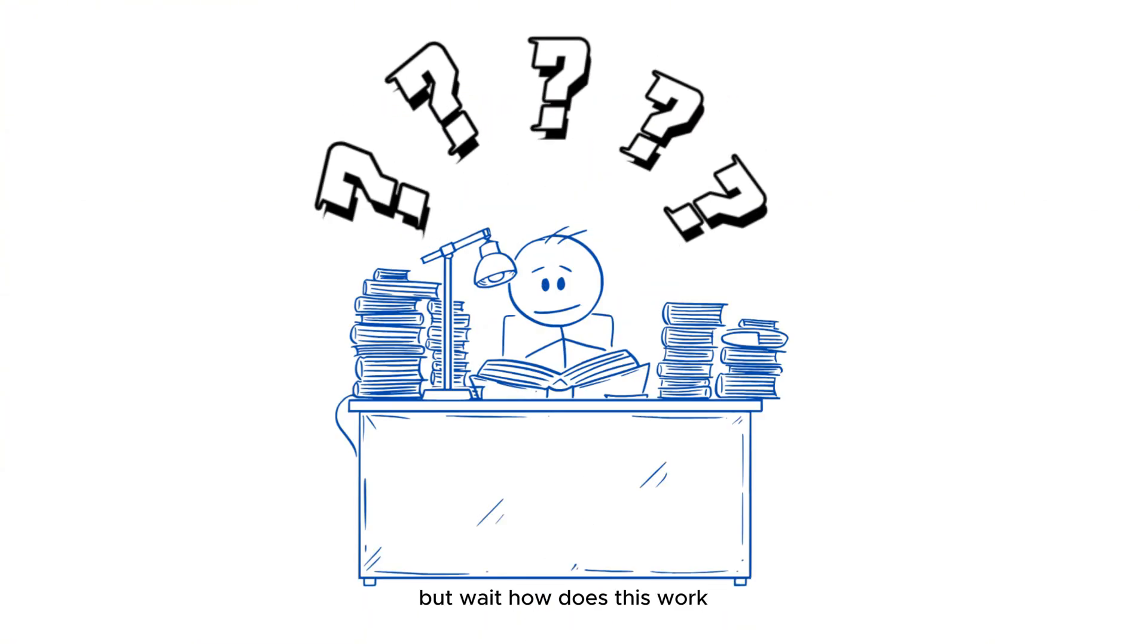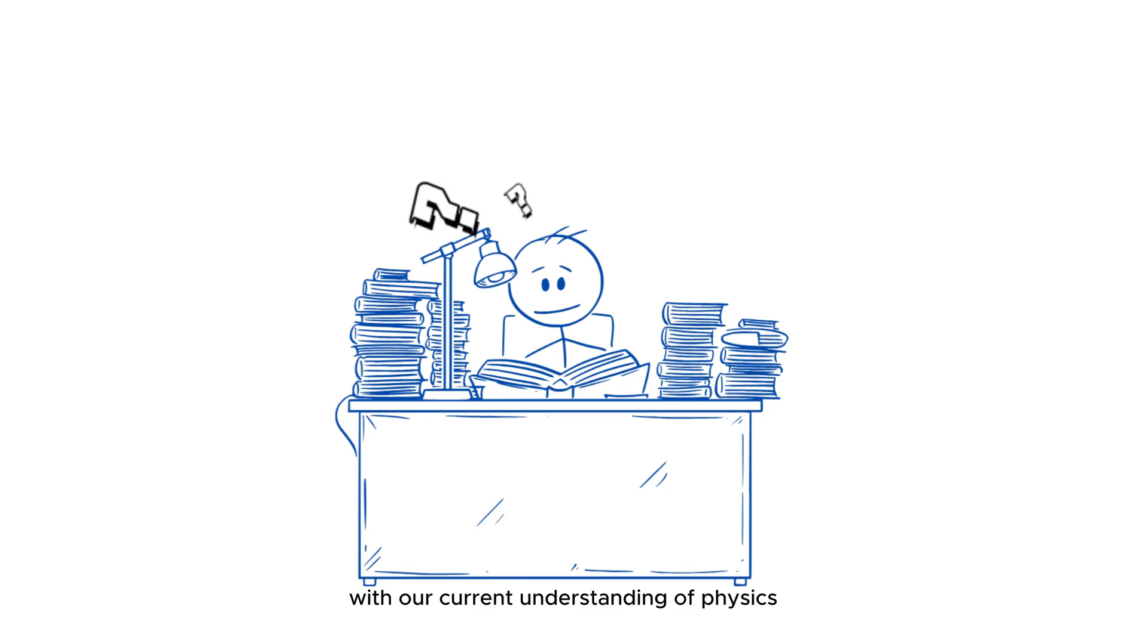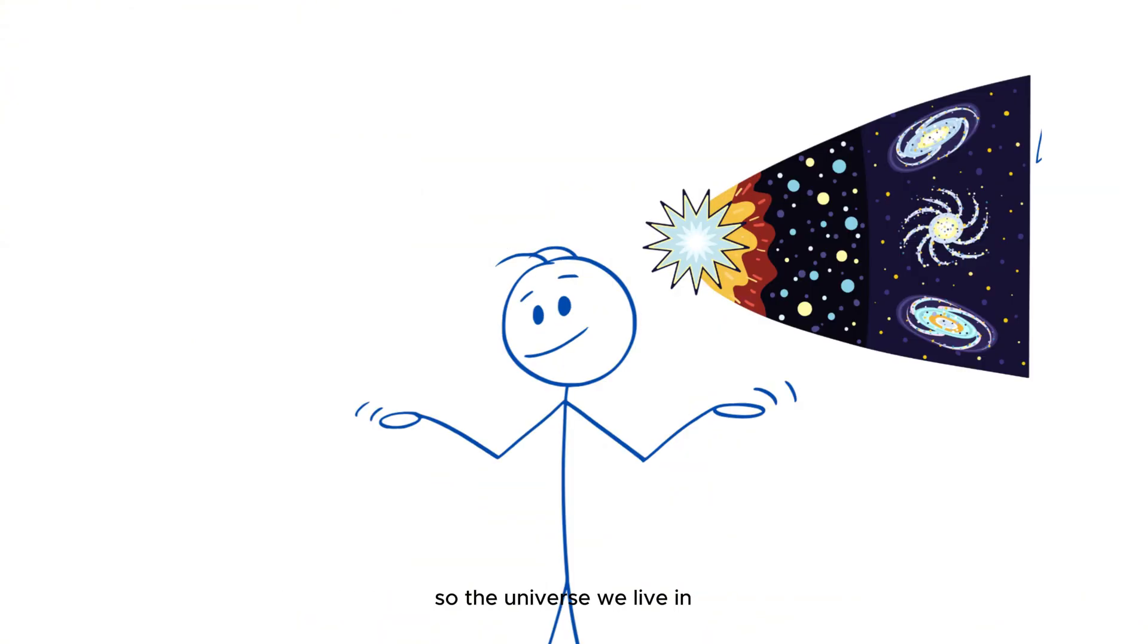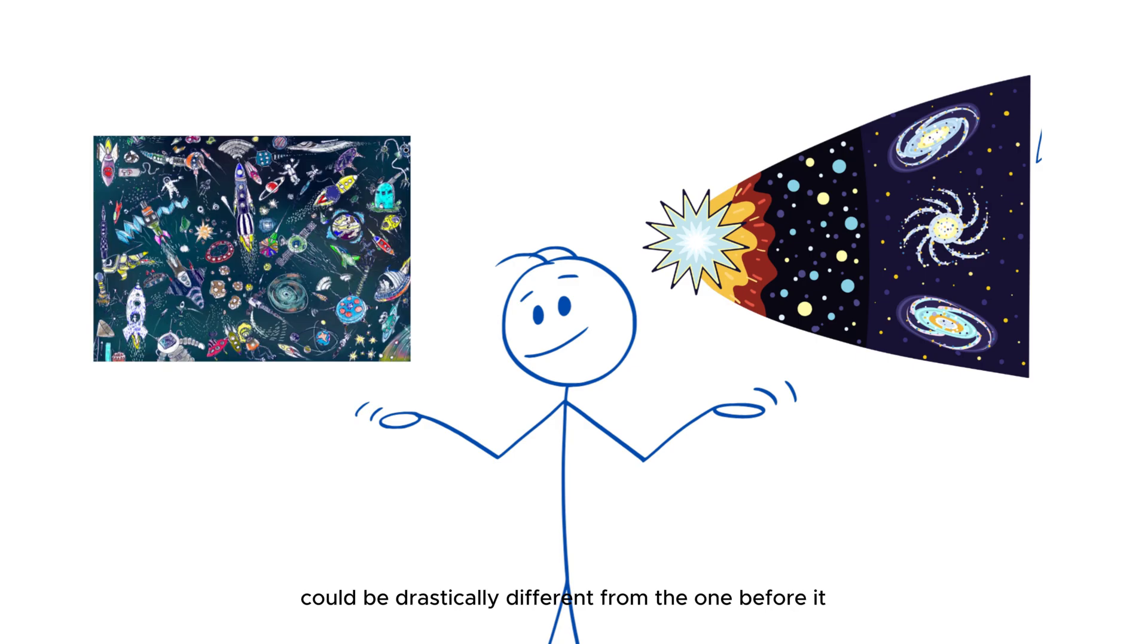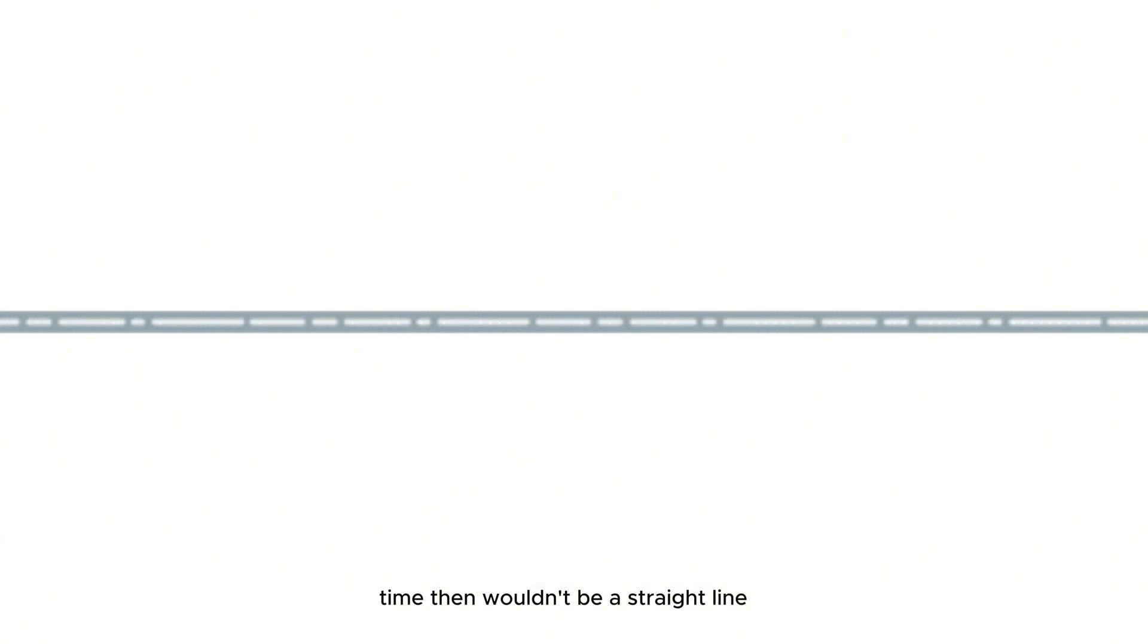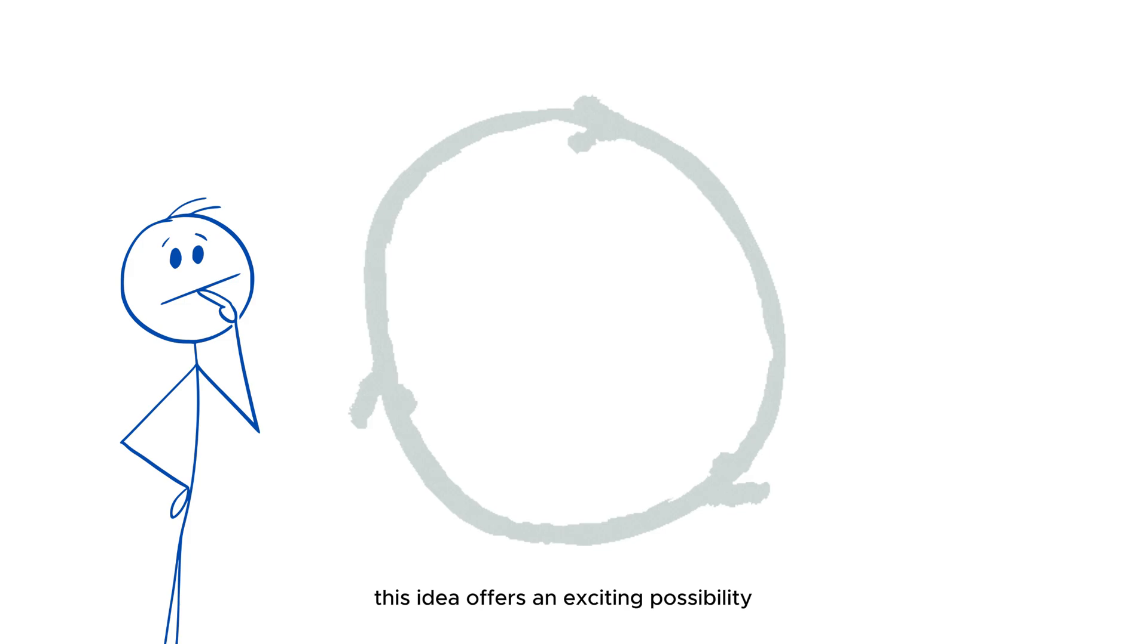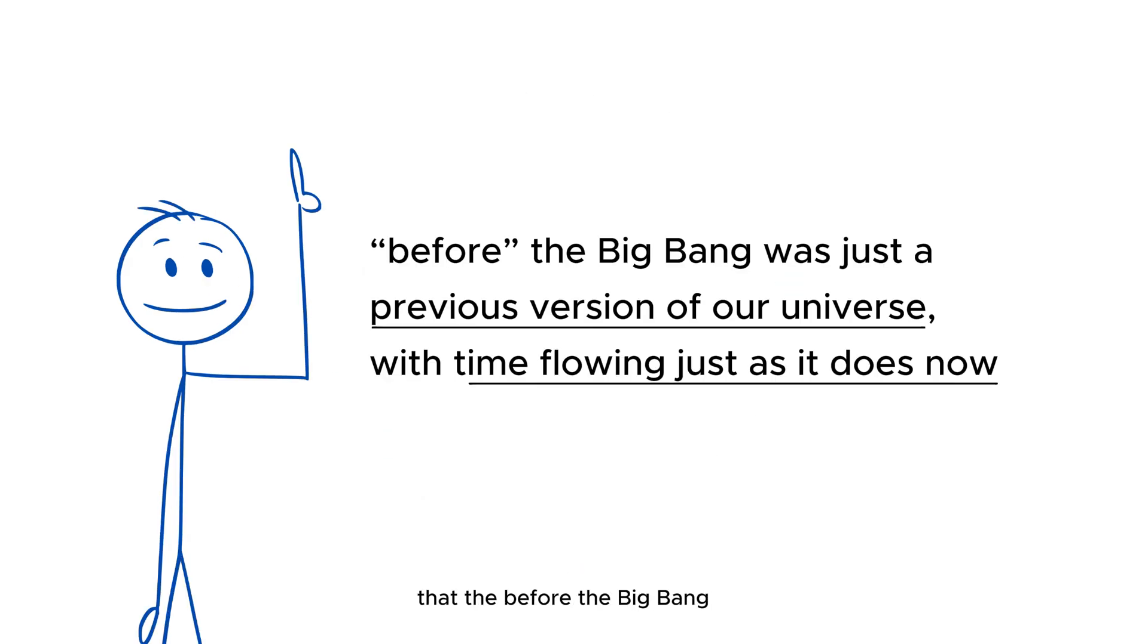But wait, how does this work with our current understanding of physics? Well, some cosmologists suggest that each cycle might erase or reset the conditions of the previous universe, so the universe we live in could be drastically different from the one before it. Time, then, wouldn't be a straight line, but an infinite loop. This idea offers an exciting possibility that the before the Big Bang was just a previous version of our universe, with time flowing just as it does now.